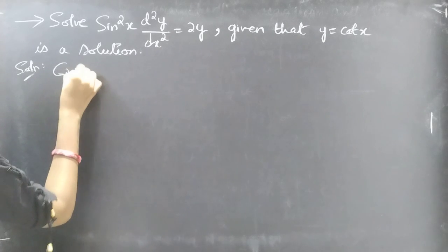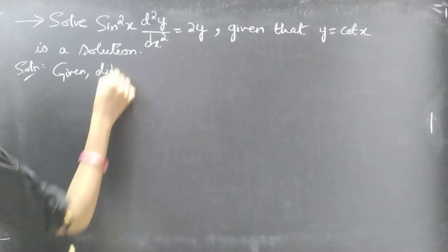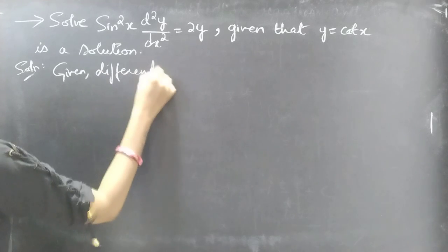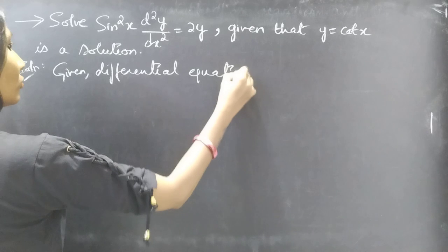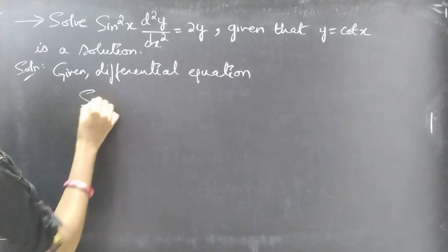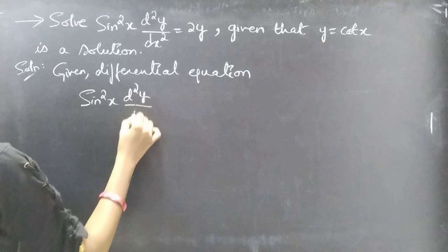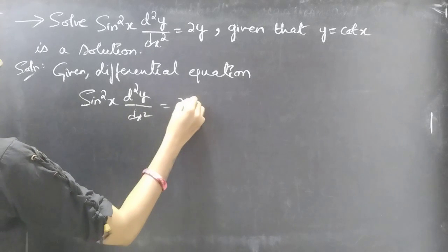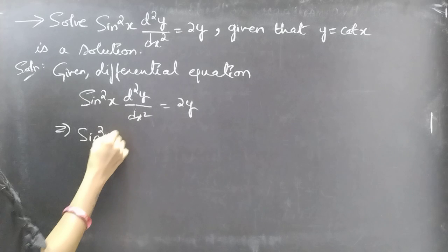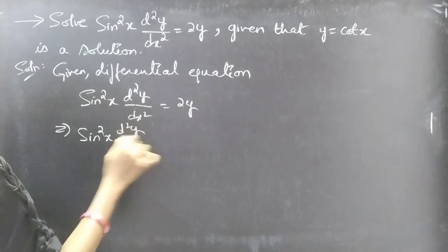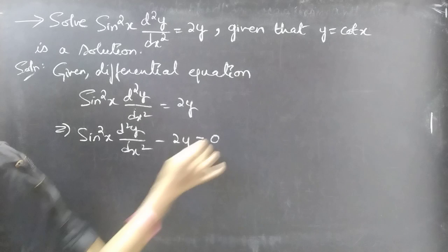Given differential equation: sin²x · d²y/dx² = 2y. We can write it as sin²x · d²y/dx² - 2y = 0.